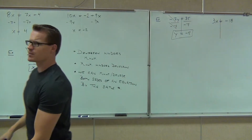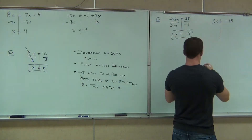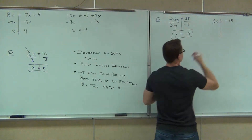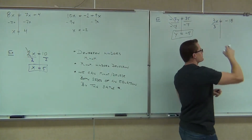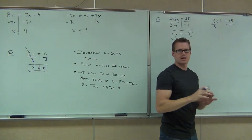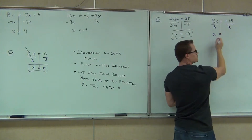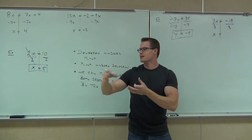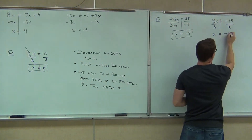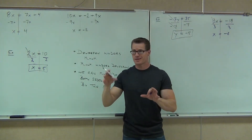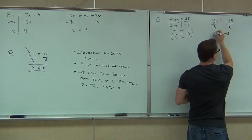3x equals negative 18. Ladies and gentlemen, what are you going to do to solve this problem? Divide — divide by 3, both sides. This creates our 1 for us, that's why we can get rid of it. We're dividing 3 by 3, making a 1. On the right-hand side, we get negative 6. Always be checking your answers, at least in your head. Plug that back in — do 3 times negative 6 and verify that equals negative 18. Then you know you got the right answer.